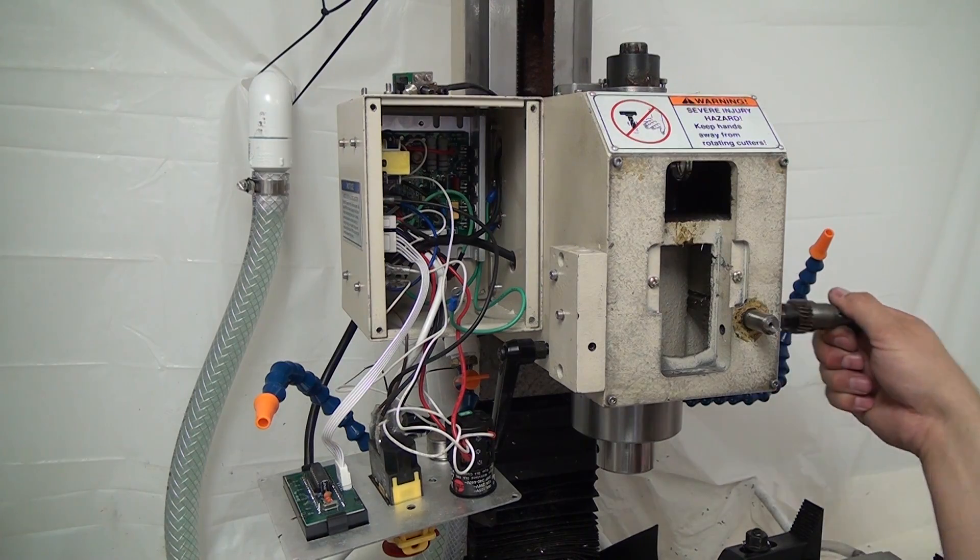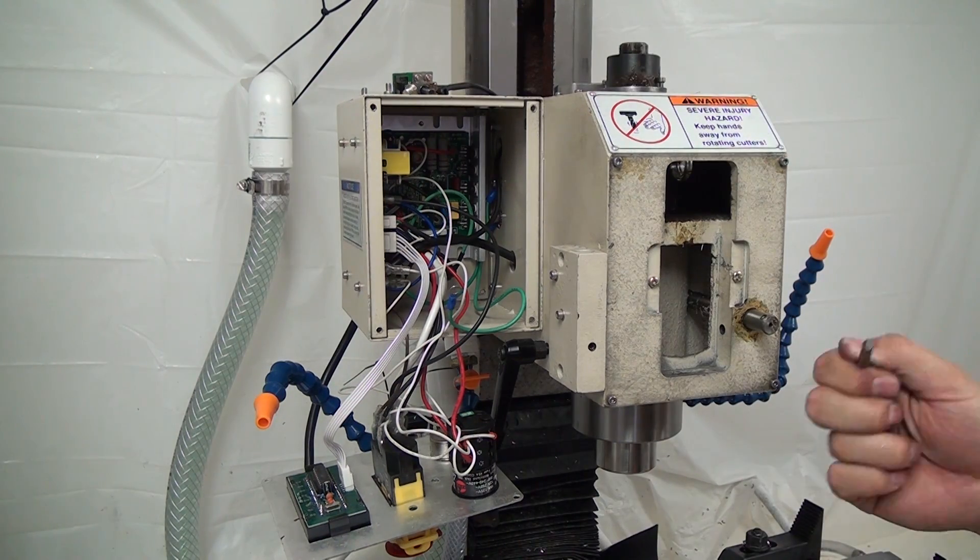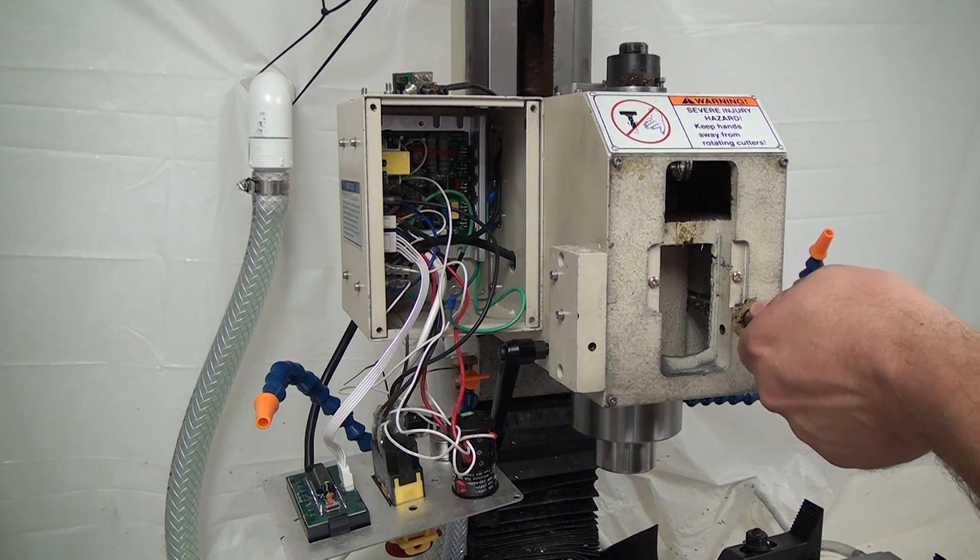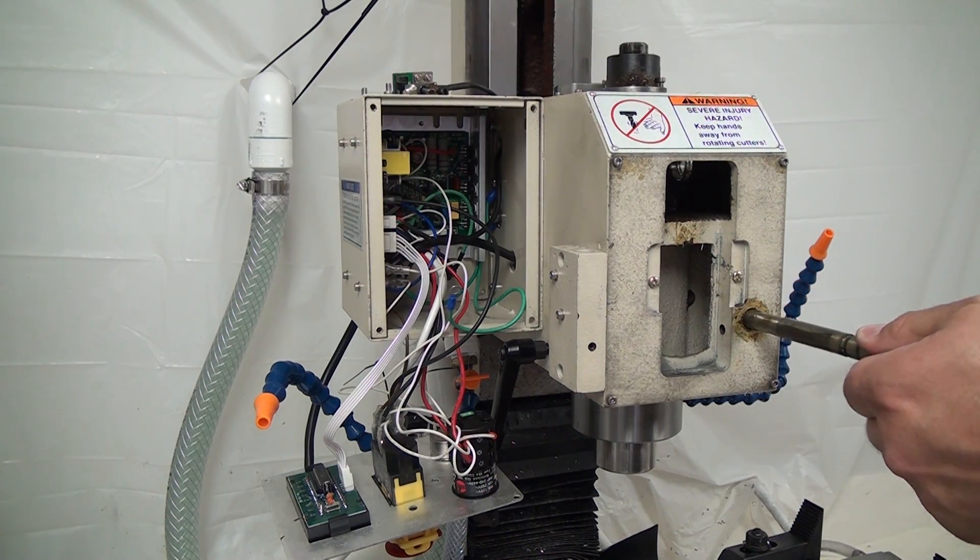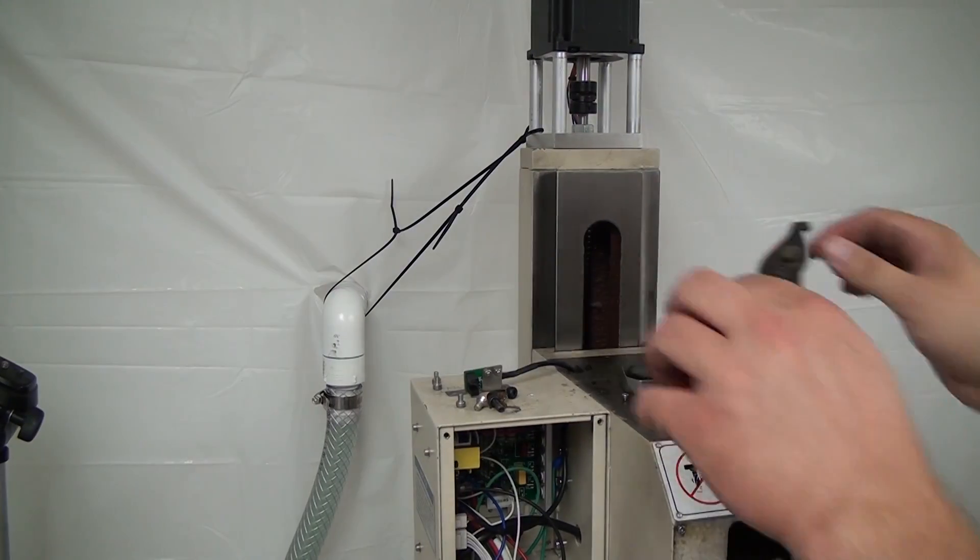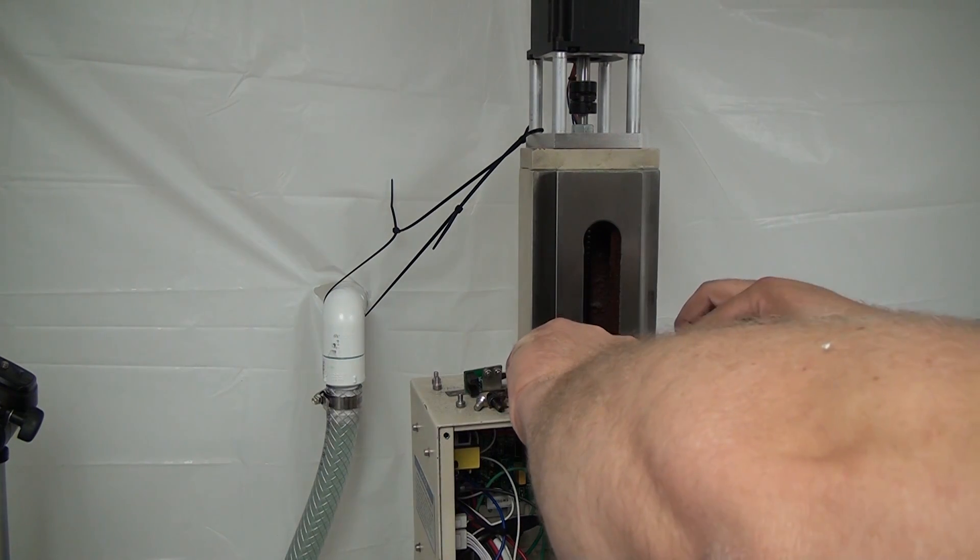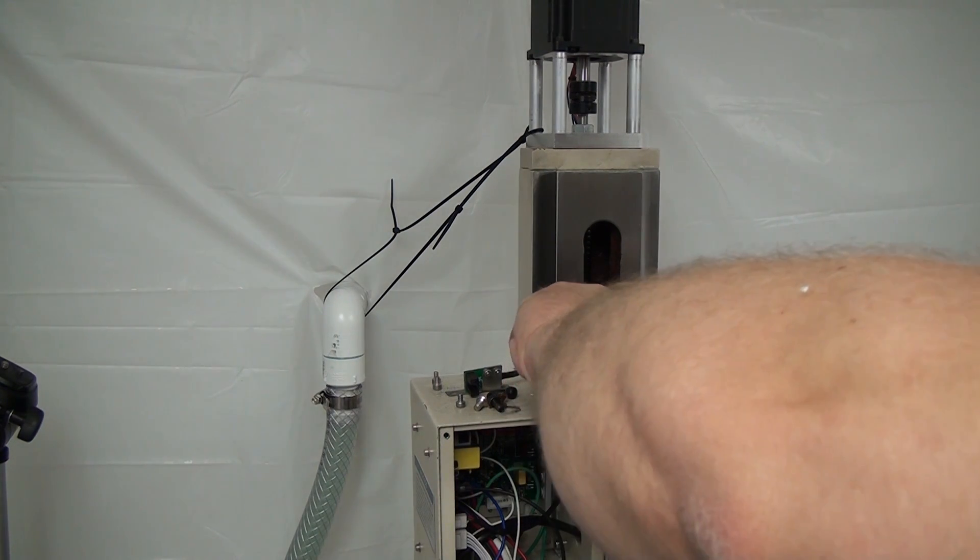So then I pulled a big C-clip and that was it for the spindle. The next thing I did was remove the rest of the quill drive system because I'm not going to be using the quill like I said.